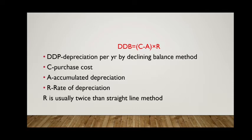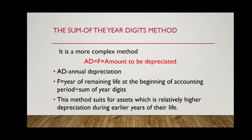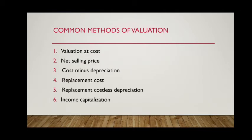In the declining balance method, the depreciation per year is calculated by subtracting the accumulated depreciation from purchase cost and multiplying it by the rate of depreciation. In the sum of the year digits method, the annual depreciation is calculated by multiplying F with the amount to be depreciated. F is the years of remaining life at the beginning of the accounting period divided by the sum of year digits. This method is suited for assets which have relatively higher depreciation during the earlier years of their life.